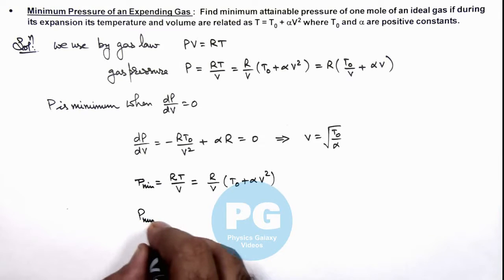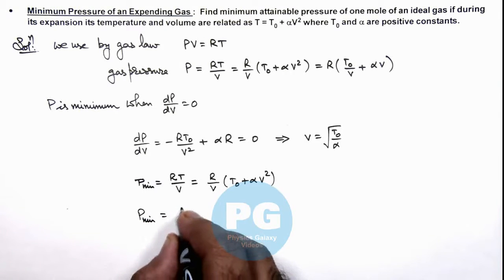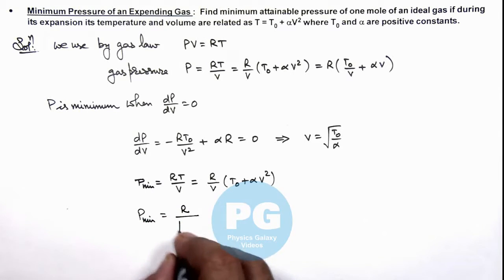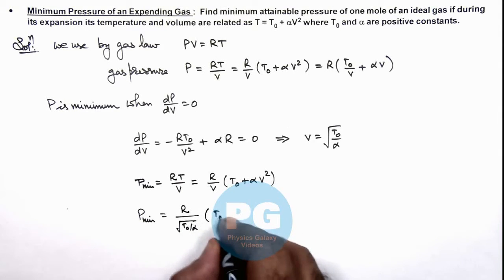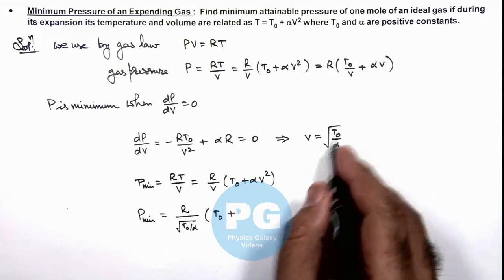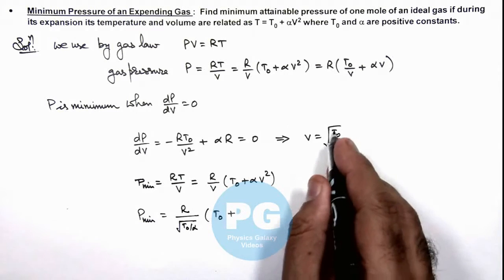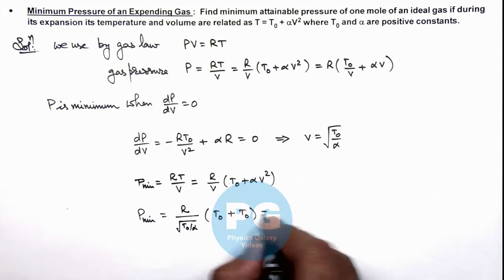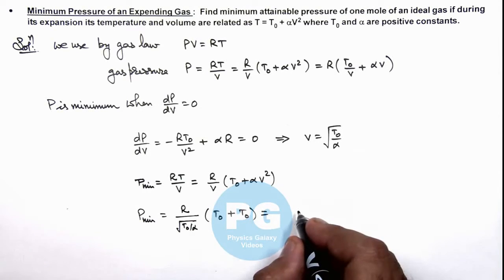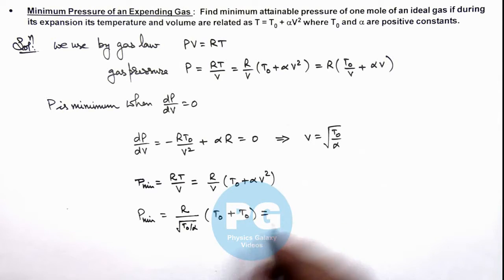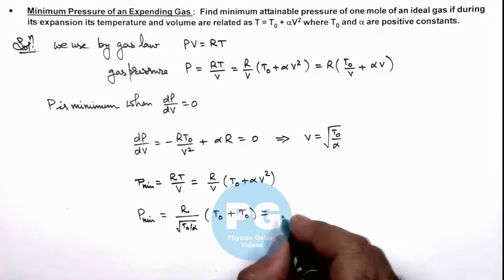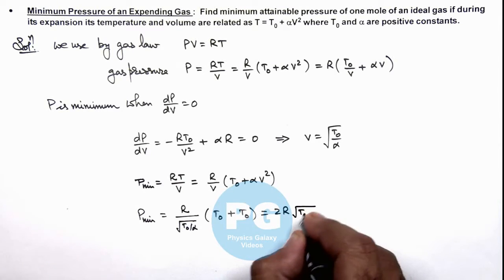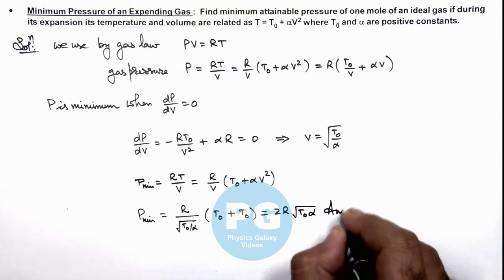So the value of minimum pressure is given as R/√(T₀/α) multiplied by (T₀ + T₀). On simplifying, the result is 2R√(T₀α). That is the result of this problem.